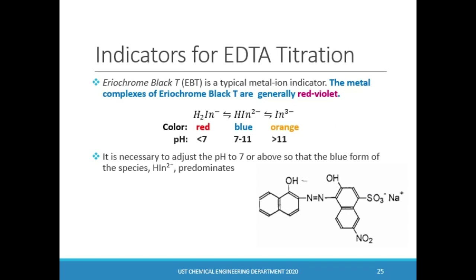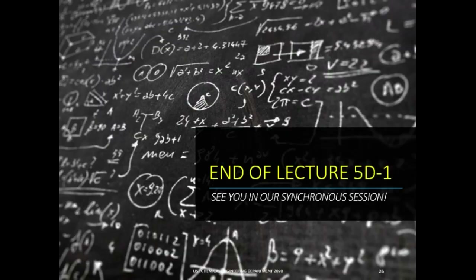Most complexometric indicators are also polyprotic and usually exhibit different colors depending on the dominant species in solution. For example, consider the indicator used in experiment 5, which is Eriochrome Black T, or EBT. The color of EBT could be red, blue, or orange in solution, depending on the dominant species and the solution pH. Since the color of the metal-EBT complex is red-violet, it would be very hard to see an endpoint that changes from red-violet to red. Thus, it is preferred to buffer the solution at a pH slightly above 7, so that once all the metal ions have complexed with EDTA, the solution will change from red-violet to blue, signaling the endpoint. When choosing the pH, make sure the working pH is favorable for both the metal-EDTA reaction and the indicator. This ends the first part of Lecture 5D. Thank you for listening and see you in our synchronous discussion.